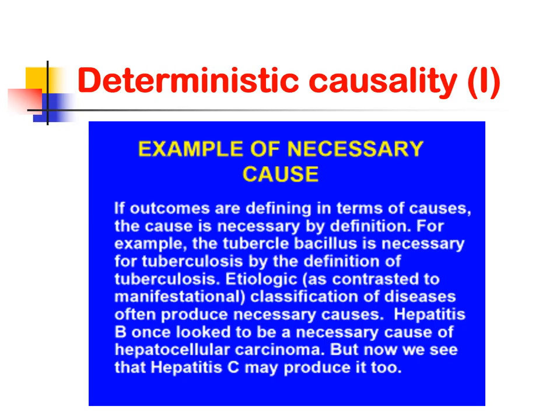As an example of a necessary cause: if outcomes are defined in terms of causes, the cause is necessary by definition. For example, the tubercle bacillus is necessary for tuberculosis by the definition of tuberculosis. Etiologic classification of diseases often produces necessary causes. Hepatitis B was once thought to be a necessary cause of hepatocellular carcinoma, but now we see that hepatitis C may produce it also.